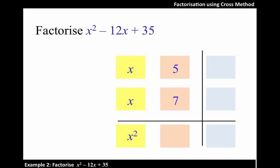Next, let's do the cross multiplication. We know that the sum of these two terms should result in the middle term, which is -12x.